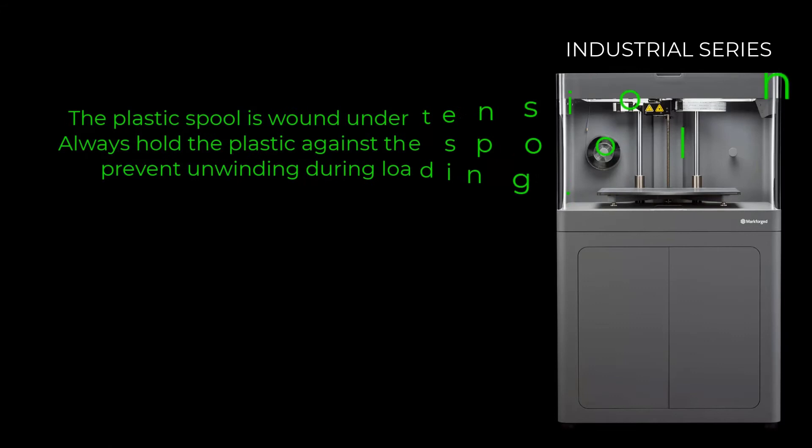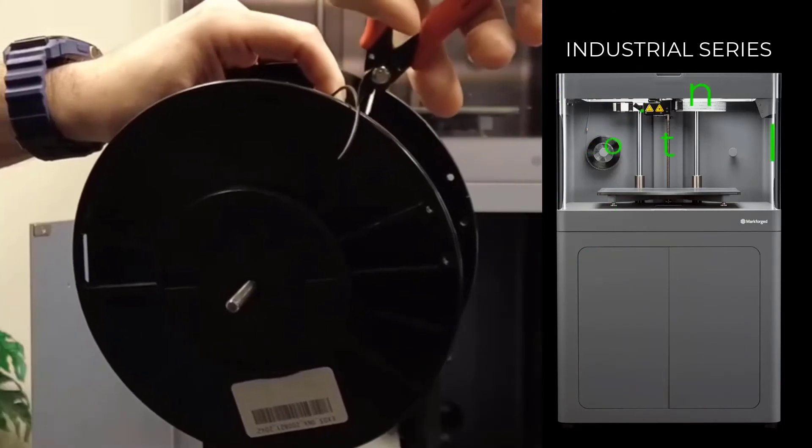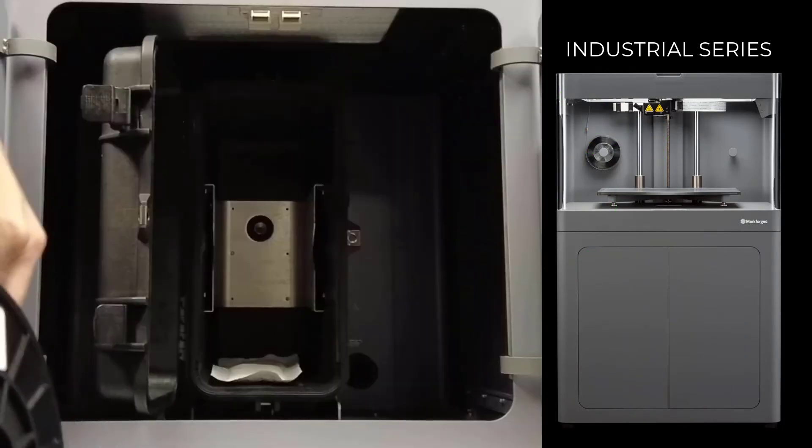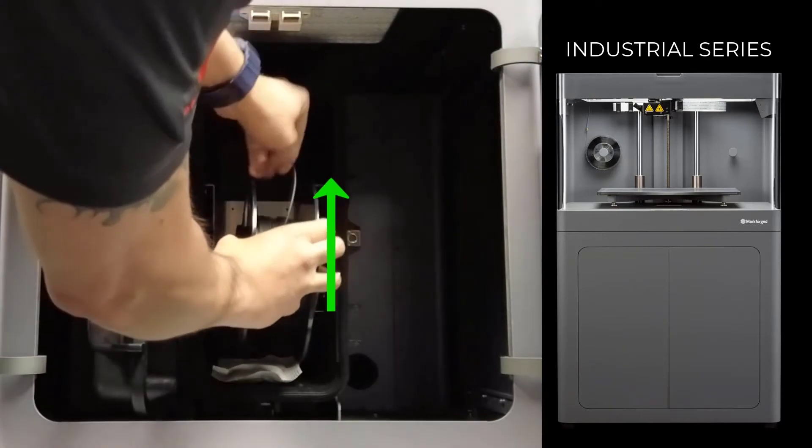Note, the plastic spool is wound under tension. Always hold the plastic against the spool to prevent unwinding during loading. Using wire cutters, cut the end of the filament at a 45 degree angle such that it can easily unspool to feed into the tube.